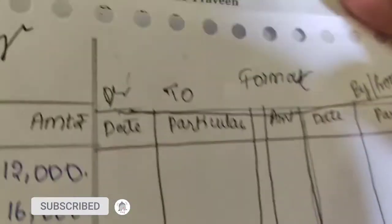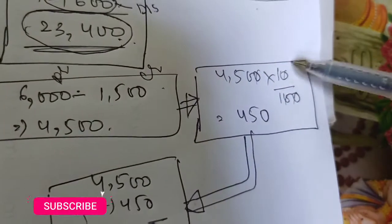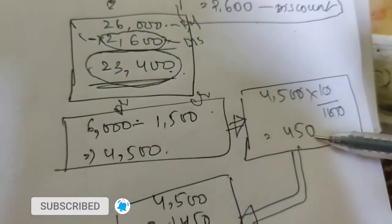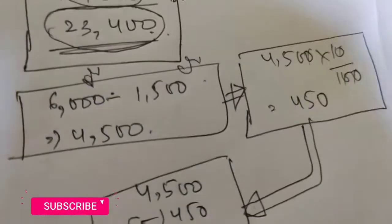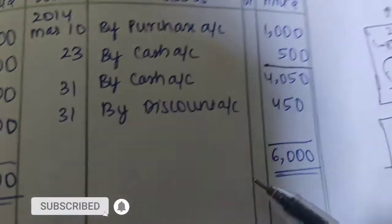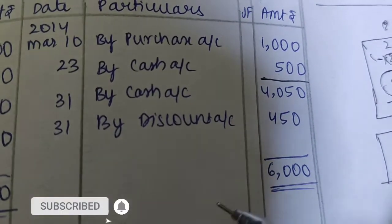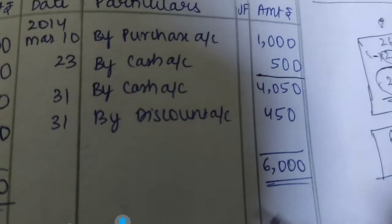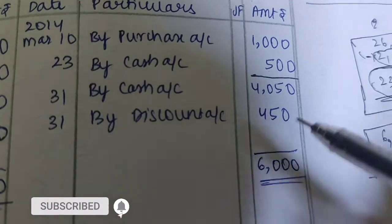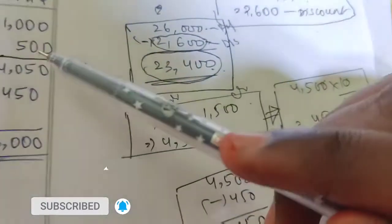This balance of 4,500 has a 10% discount applied. 10% of 4,500 is 450. So the discount entry is: by Discount, 450. The remaining balance amount after the discount is 4,050, which is: by Cash, 4,050. So the account is settled with a discount of 450 and cash payment of 4,050.